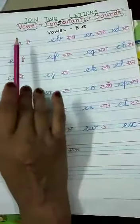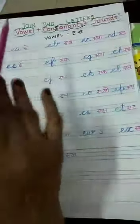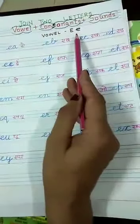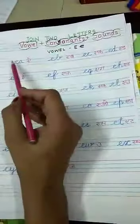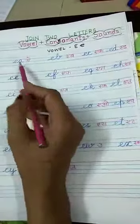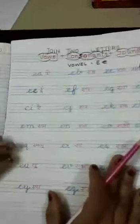First, we read with vowel E — vowel E plus consonants and their sounds. First, we will read all the words.